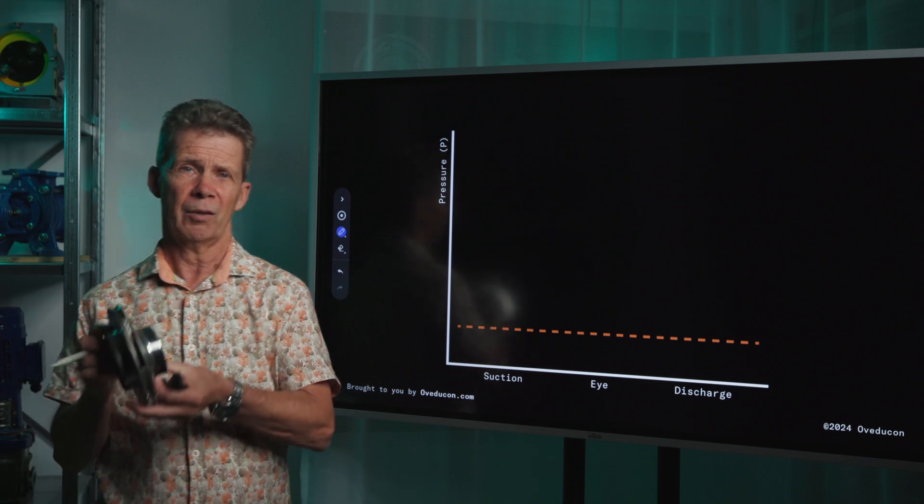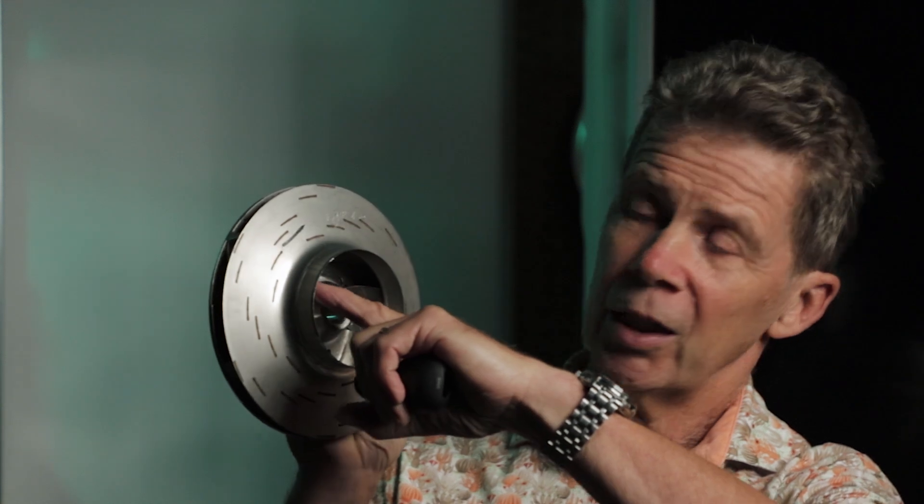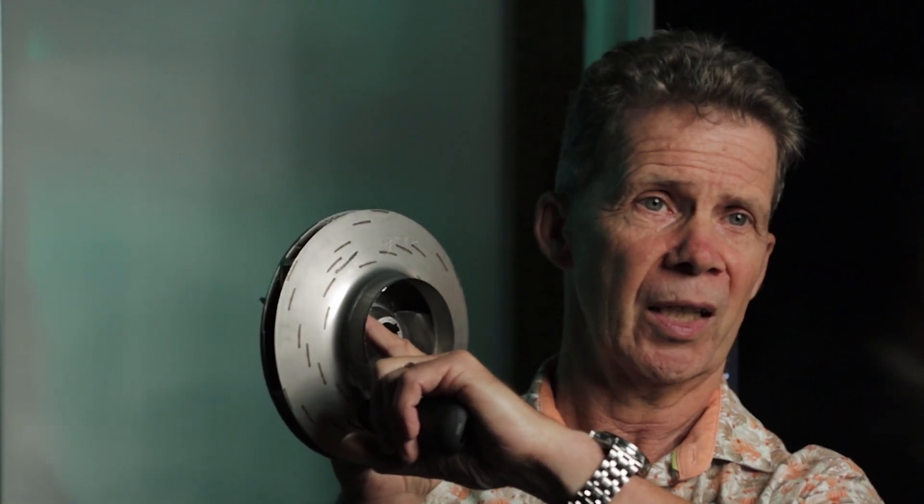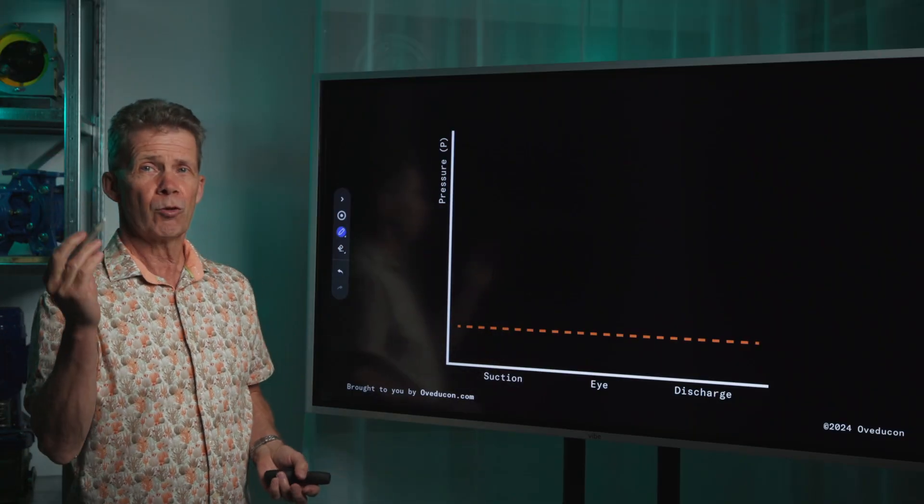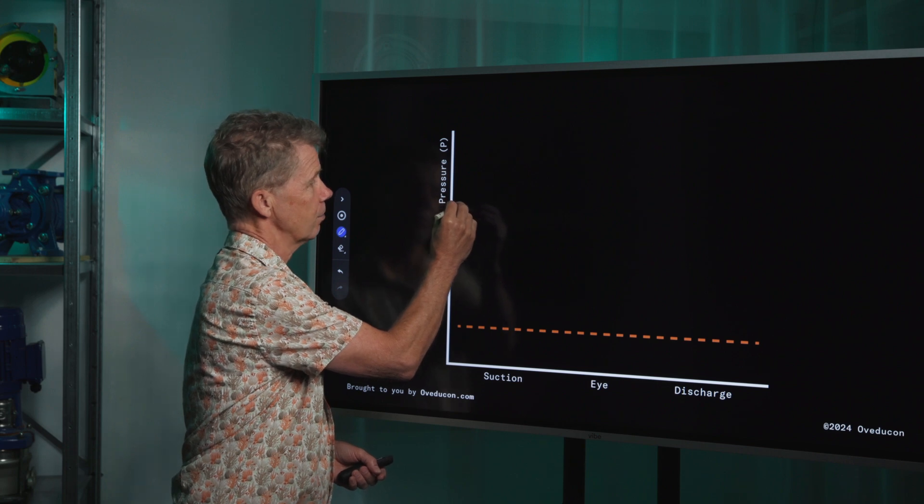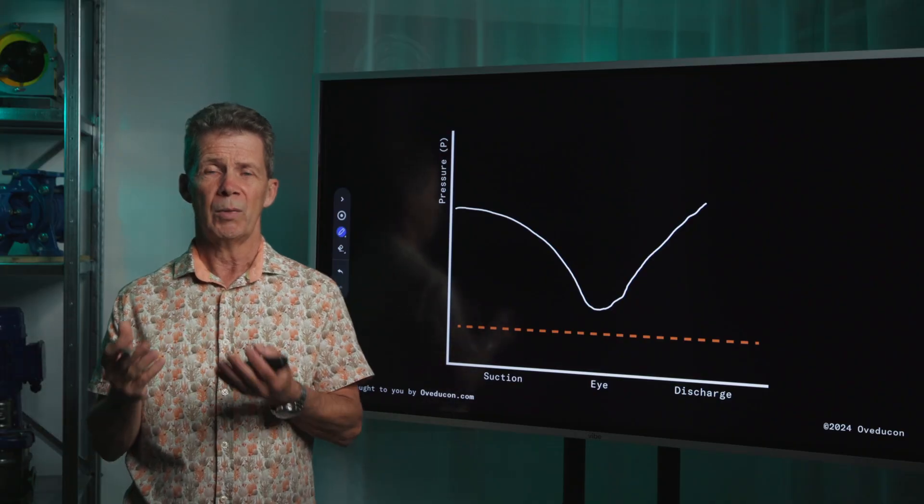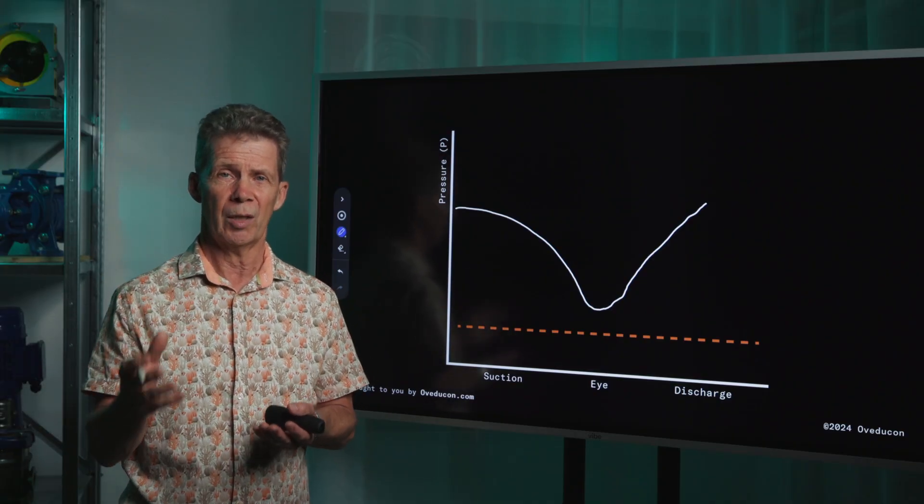I have an impeller here. This is the suction side of your impeller. Here you can see the impeller eye. This is the discharge side of the impeller where the medium is leaving the impeller. If I draw the pressure line on the suction side, it can go like this. It will go down and it will go up again when the medium is leaving your impeller.